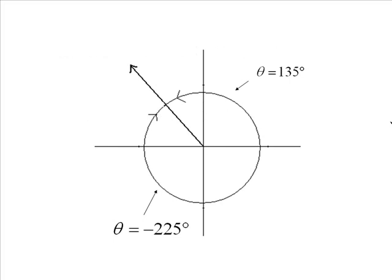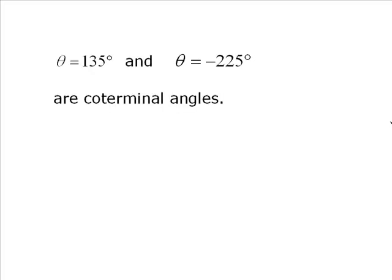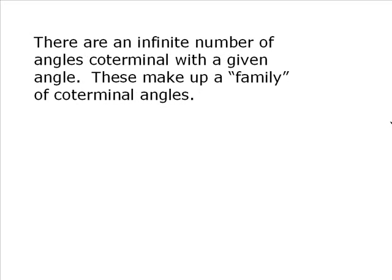And then theta equal negative 225, starting at the same place, but going the opposite direction, takes us to the same terminal arm. So we would call these coterminal angles. What you're probably thinking when you look at that, is that there's no limit to the number of coterminal angles that you can make. And that's true. Because you can keep making infinite loops around, or you can change the direction. So there really are an infinite number of angles coterminal with a given angle. And these make up what occasionally is called a family of coterminal angles.